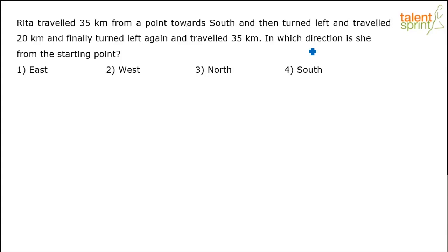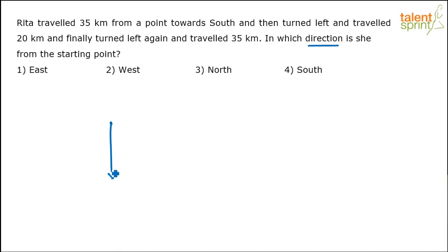Since it is about direction, we don't even have to worry about the distances, right? So just trace the path. Rita traveled 35 kilometers from a point towards south, so she started from this point, traveled 35 kilometers, and she comes here.